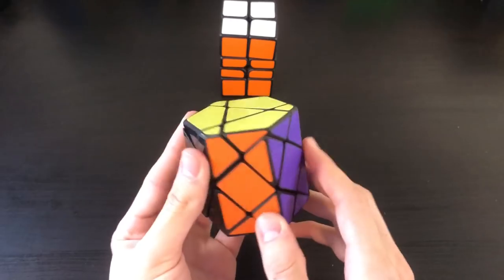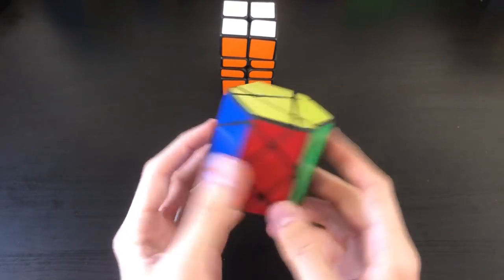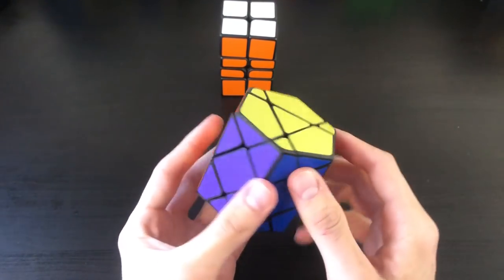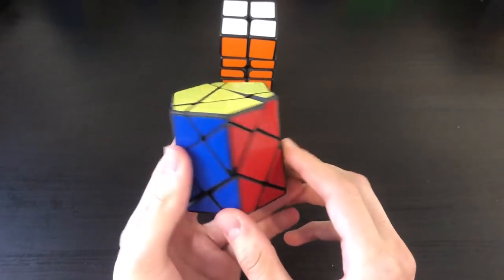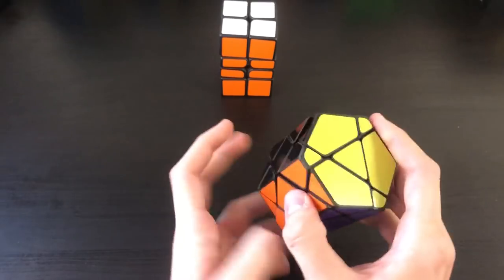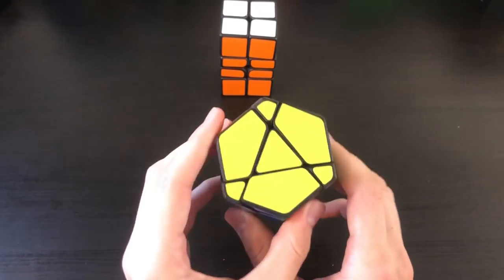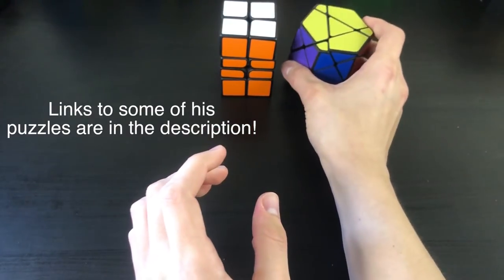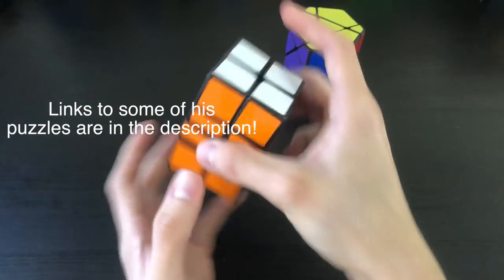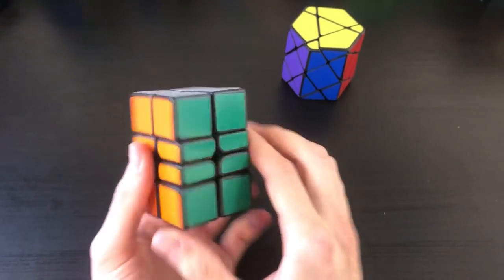Alright, so there's the solve of the hexagonal prism. This is a very well-made puzzle. It's really interesting that it's sort of all glued onto a mini 3x3. It turns very well. NK Cubed, you did a great job with this. I would highly recommend anyone check this out if they're able to. I'm not quite sure if they're for sale.